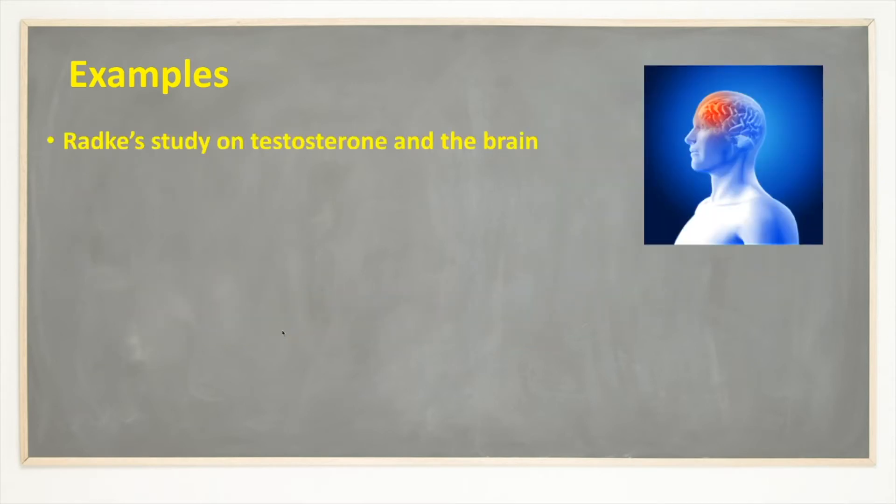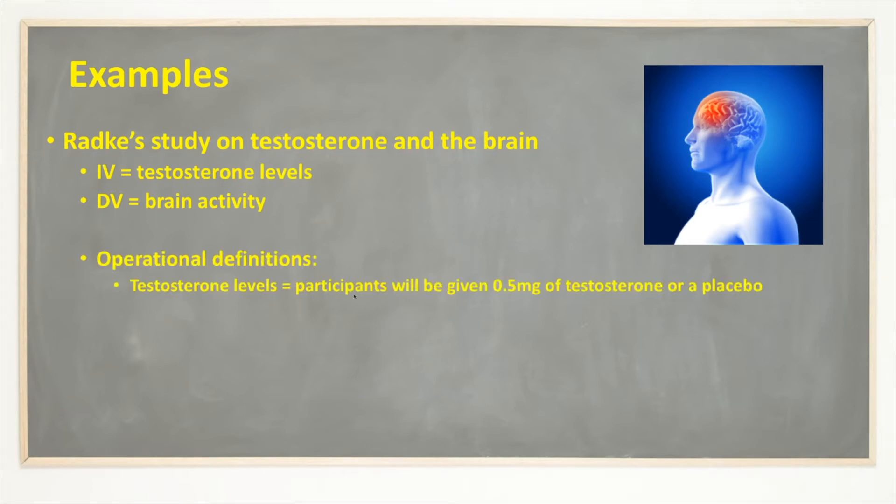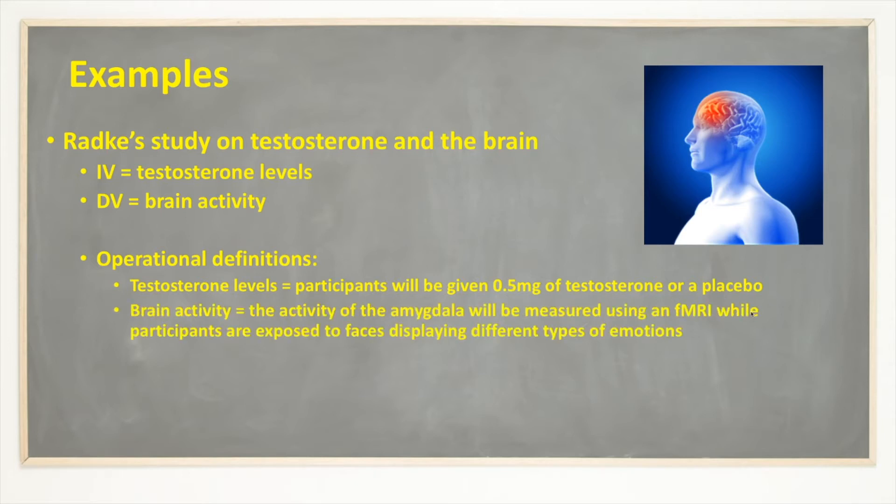Final example, Radke's case study on testosterone and the brain. So the independent variable is testosterone levels, the dependent variable is brain activity. The operational definition could be, participants were given 0.5 milligrams of testosterone or a placebo, right? Describing clearly the two conditions of the experiment.